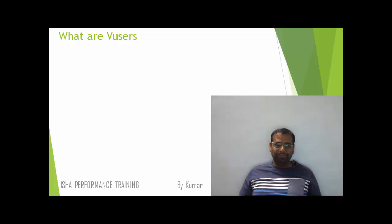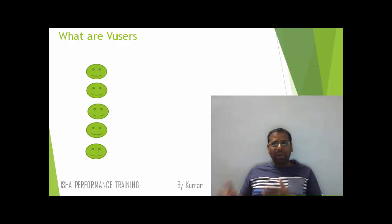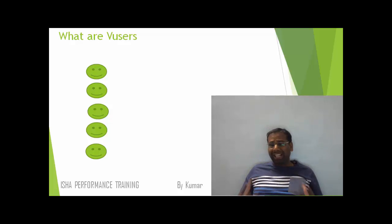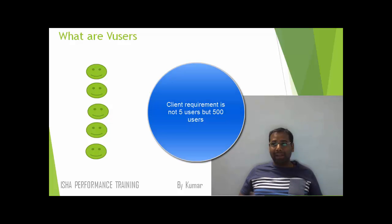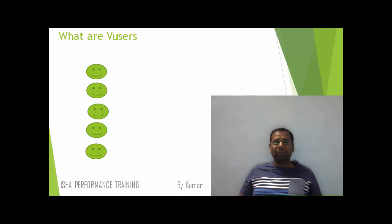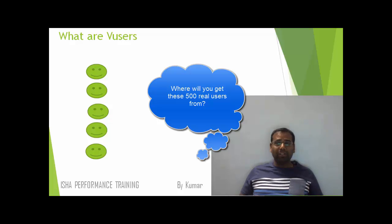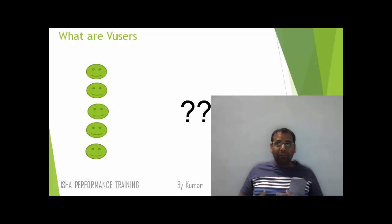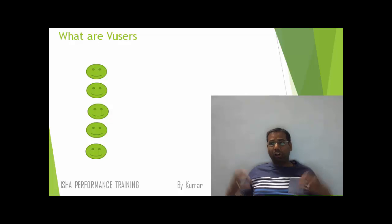Now the next thing is these users — these five users. Let's take the same Gmail application and you want it used by five users. Since it's five users, you can call your friends, family, or project team members and have them use the application. But let's say the client requirement is 500 users — the client said their application in real-time production will be used by 500 users simultaneously. We obviously have to test it with 500 users because that's the kind of load the application has to handle. So we have to create that 500-user load. Isn't it difficult to call 500 people and have them all use the Gmail application?